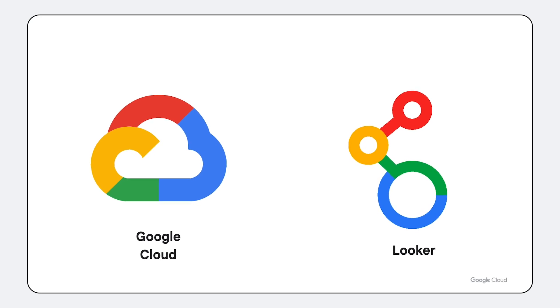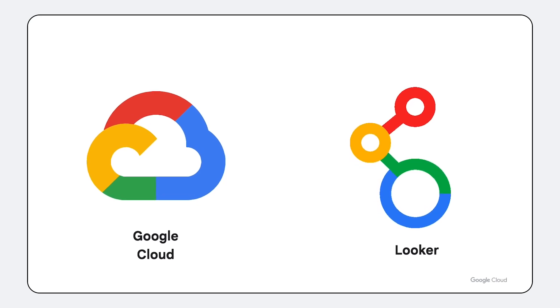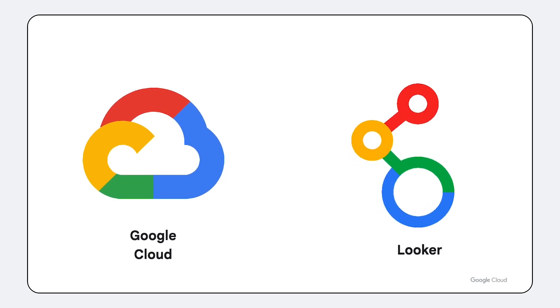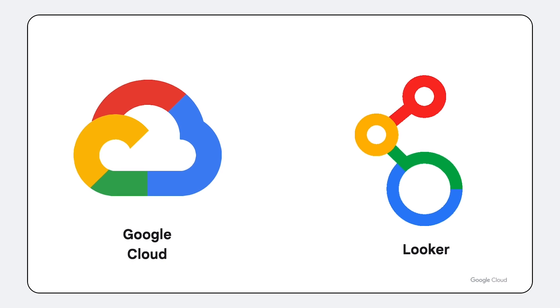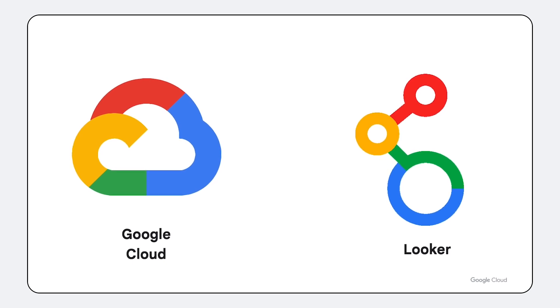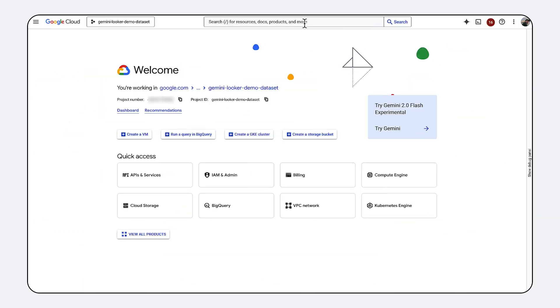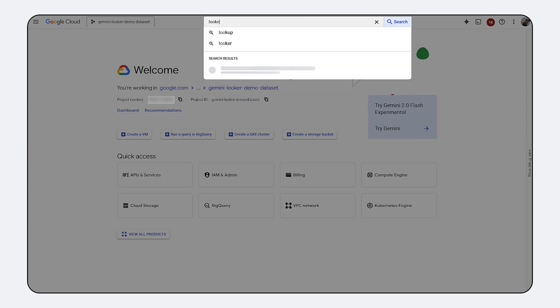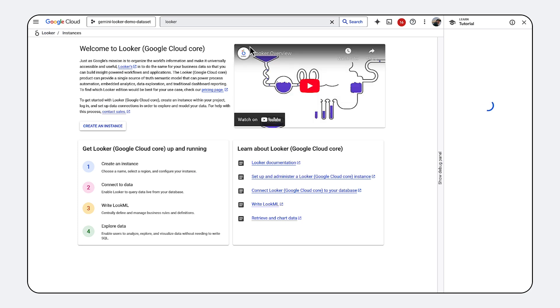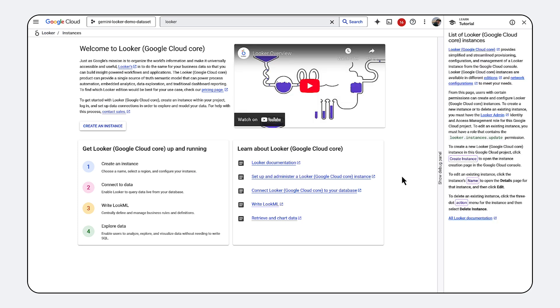Imagine an enterprise business intelligence experience that's both powerful and effortlessly integrated within your Google Cloud ecosystem. That's Looker Core on Google Cloud. By bringing the complete Looker platform directly into Google Cloud, we eliminate complexity and empower you to derive faster, more impactful insights from your data.